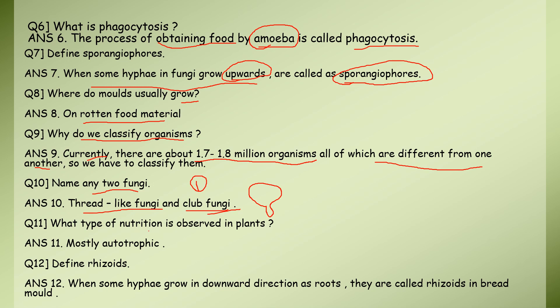What type of nutrition is observed in plants? Mostly autotrophic. Plants can prepare their own food. The nutrition in plants can be autotrophic or heterotrophic, but autotrophic nutrition is the primary mode.